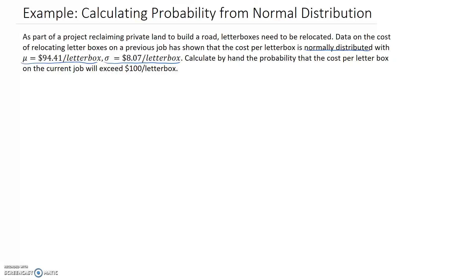I'm going to start by drawing a sketch of the probability distribution. We've been told that it's a normal distribution, so it's going to look like the bell curve shape. I'll call this x on the x-axis - this is the cost per letterbox.